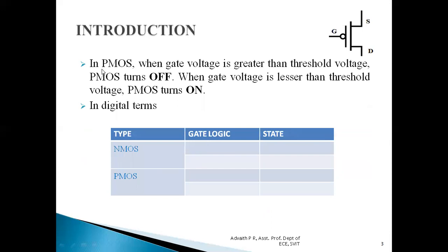Similarly, there is another flavor of MOSFET called the PMOS, or P-channel MOSFET. In P-channel MOSFET, under digital abstraction, when the gate input is supplied with logic level low, the P-channel MOSFET turns on and there is a connection established between the source terminal and the drain terminal. When the gate input is supplied with logic level high, there is no connection between source and drain, and the P-channel MOSFET is off.